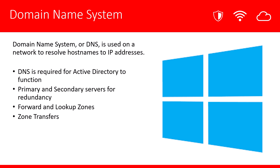There are some things we're going to be talking about today in review. For example, we're going to cover why DNS is required for Active Directory to function. We're going to talk about some of the use cases on deploying DNS in your environment. In addition, we'll talk about primary and secondary servers to build a redundant infrastructure. We'll take a look at forward and lookup zones and talk a little bit about the zone transfers between DNS servers.